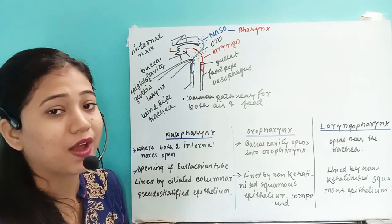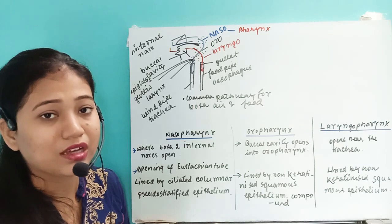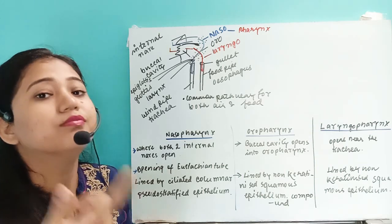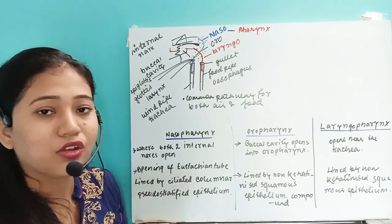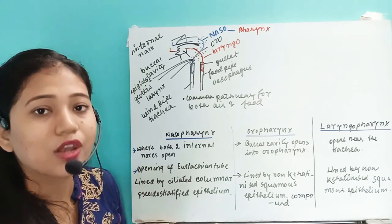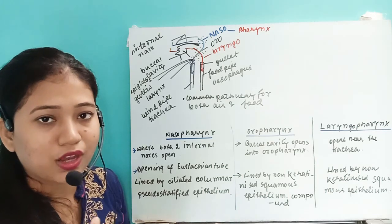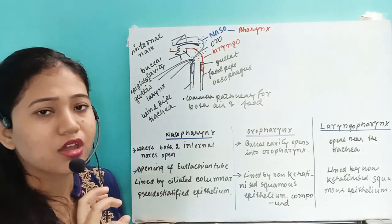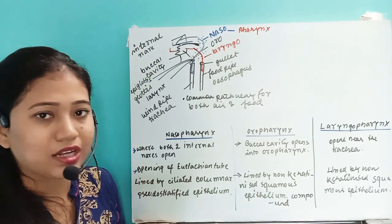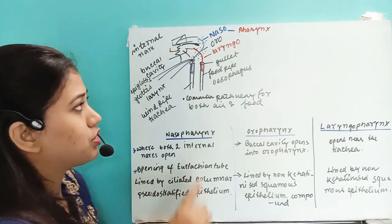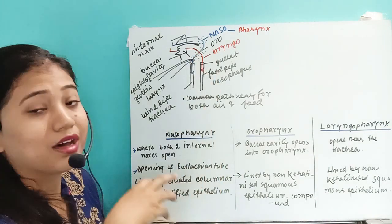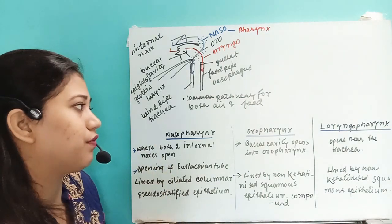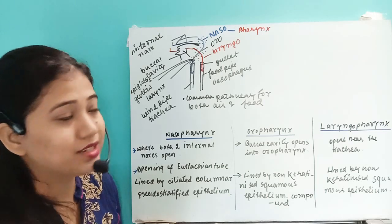Because there is a common space, only one thing can pass at a time — either food or air. That's why when we are breathing we cannot swallow, and when we are swallowing, breathing stops. This is the common pathway where food and air have to pass through the pharynx.